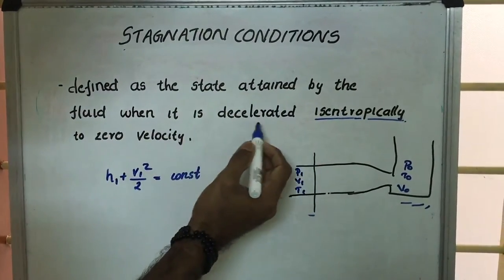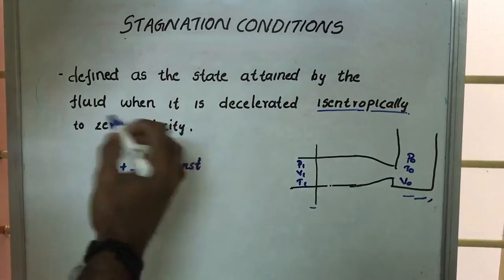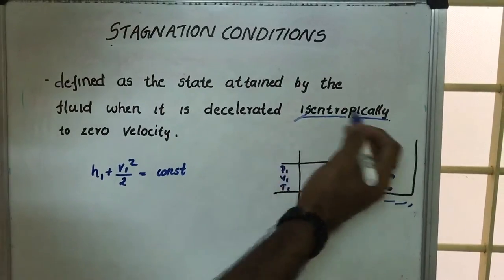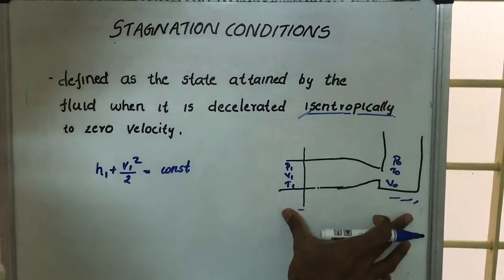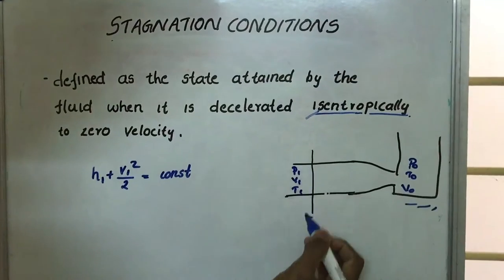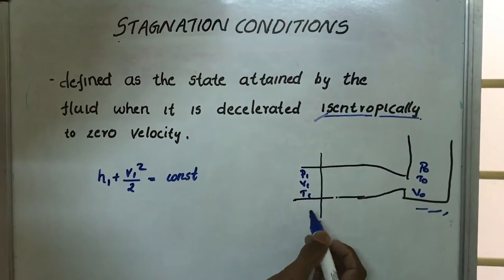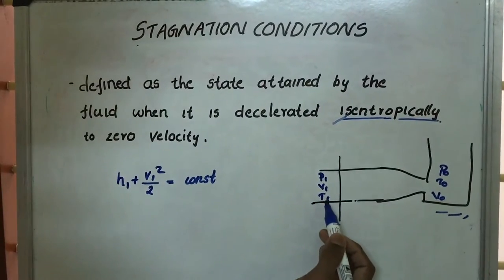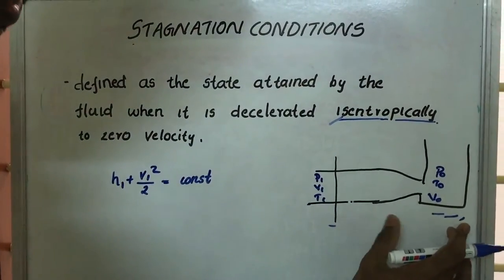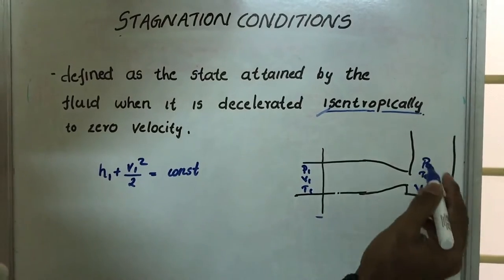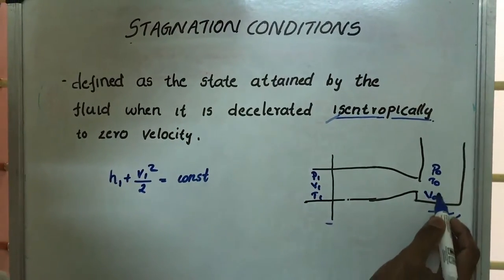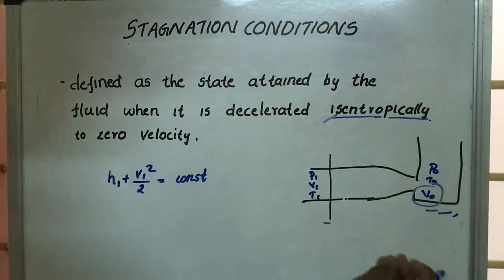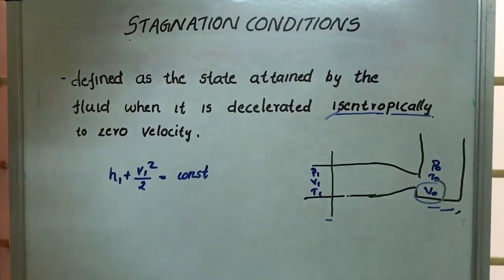It is defined as the state attained by the fluid when it is decelerated isentropically to zero velocity. Look at this picture in which the initial conditions are pressure p1, velocity v1, and temperature t1, and the final conditions or reservoir condition is p0, t0, v0, where v0 is equal to zero — the fluid is decelerated to zero velocity.